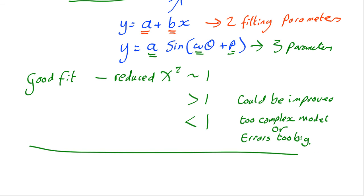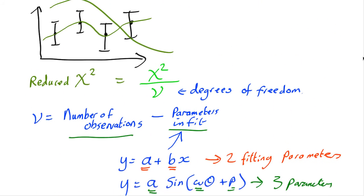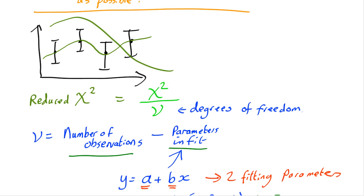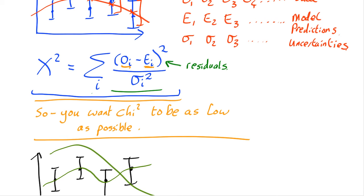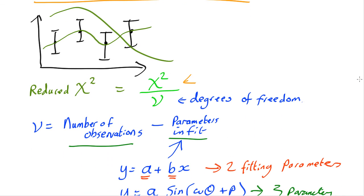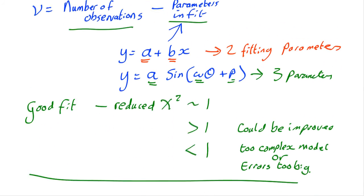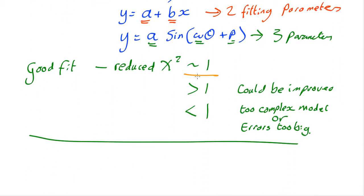So that's how you tell if a model is a good fit. You compute chi-squared up here, you try and get it as low as possible. Then you work out the reduced chi-squared by dividing by the number of degrees of freedom, and you want a value close to one.